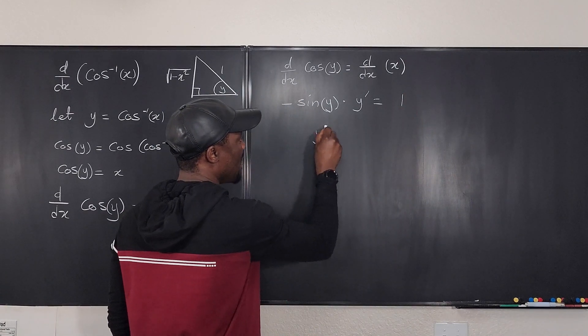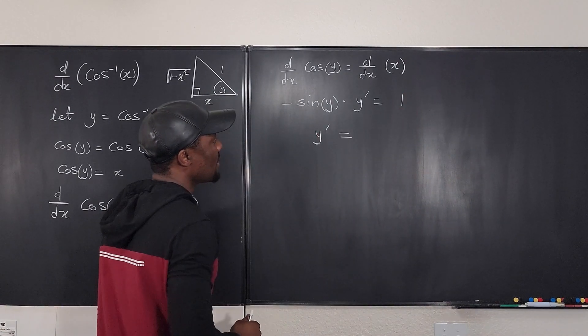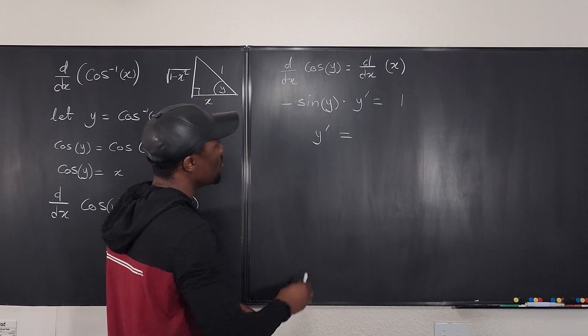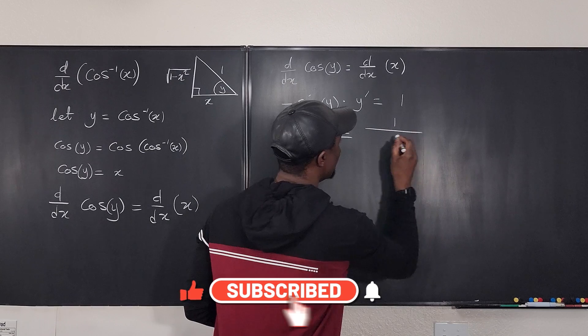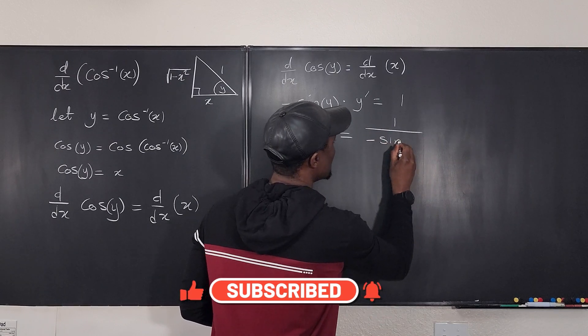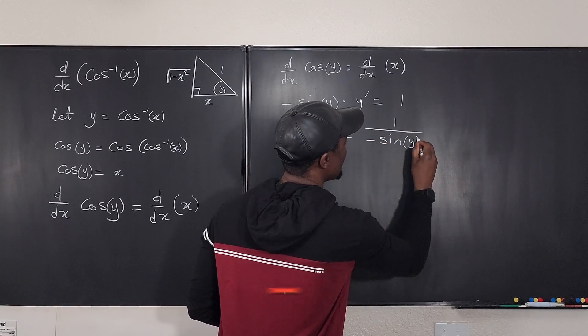So you see that y prime will be equal to, what is y prime? We divide both sides by negative sine y. So it's going to be one over negative sine y.